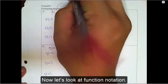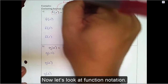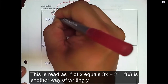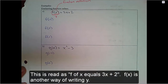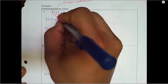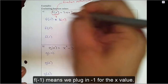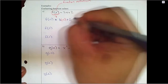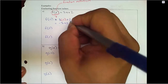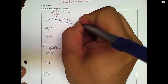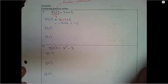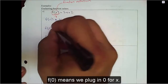Now let's look at function notation. This is read as f of x equals 3x plus 2. f of x is another way of writing y. Here we are going to evaluate some function values. f of negative 1 means we plug in negative 1 for the x value. f of 0 means we plug in 0 for x.